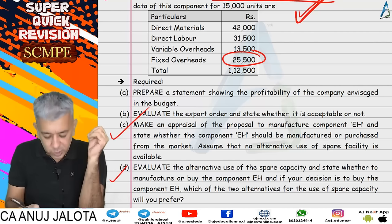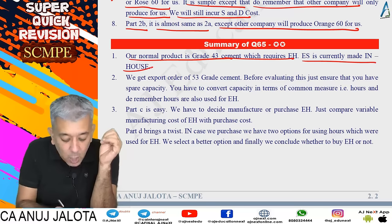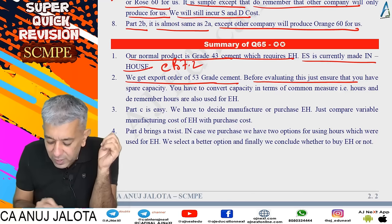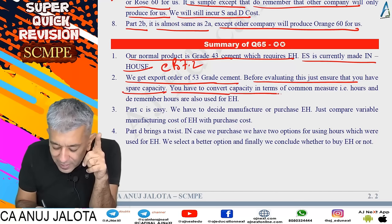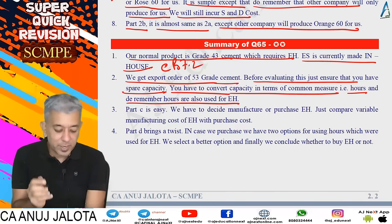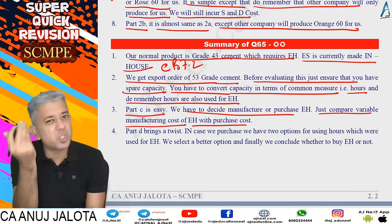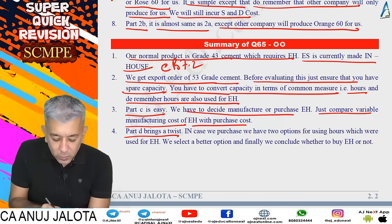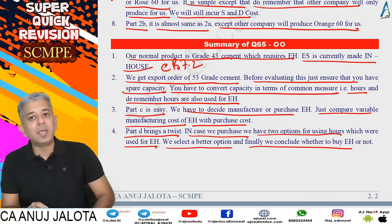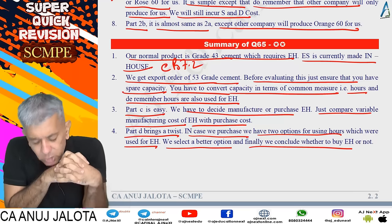Summary: Normal product is 43 Grade Cement which requires EH, currently made in-house at variable cost 7.2. We get an export offer for 53 Grade Cement — before evaluating, ensure you have spare capacity by converting capacity into common measure of hours; do remember hours are also used for EH. Part C: compare variable manufacturing cost of EH with purchase cost — 7.2 versus 7.9. Part D brings a twist: if we purchase, we have two options for the hours which were used for EH; select the better option and conclude whether to buy EH or not. Net benefit was calculated here. With that, this lecture is all done.